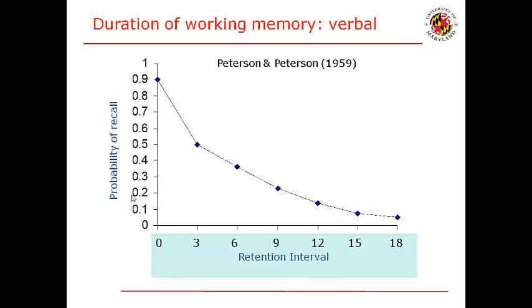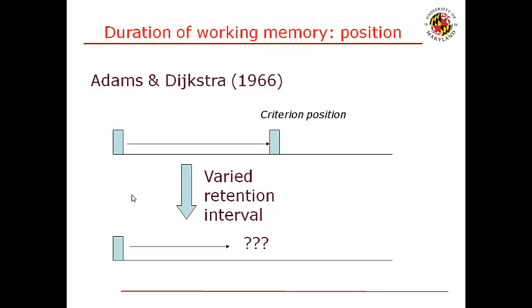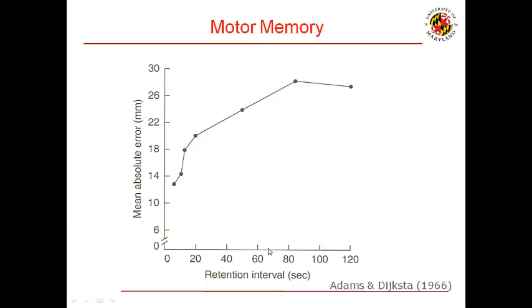Similar results featuring motor memory have been highlighted by Adam and Dijkstra. Results of their experiment indicate that arm positions in space that are experienced only one time each are lost from working memory at a rate very comparable to the verbal case discussed in the previous slide. As you can see, as the retention interval is increased, our capacity to reproduce the movement becomes low — so we make more errors.